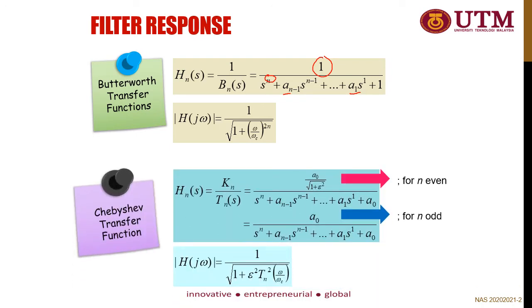Next is the transfer function for Chebyshev. In comparison with Butterworth, which has constant 1 on top, for Chebyshev you have KN, which depends on whether the filter order N is even or odd. If N is odd, the numerator will be A0 — these coefficient values are obtained from a table. If N is even, KN is represented by a specific equation. All equations can be referred from the filter characteristic appendix or from the table; you do not have to memorize all the equations.